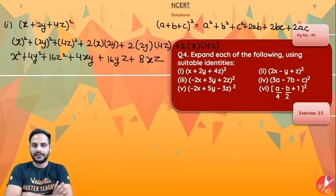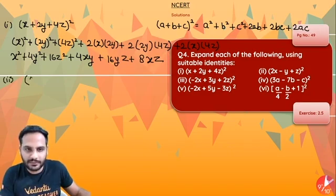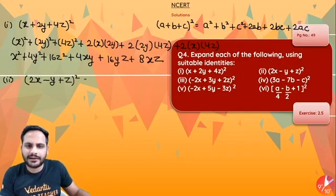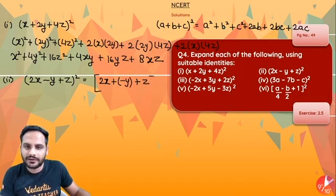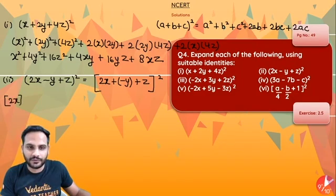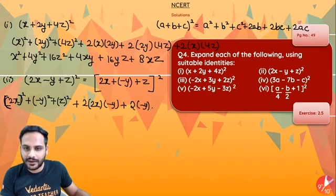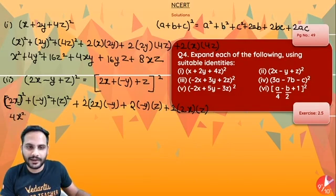For the second one: (2x − y + z)². Write it as (2x + (−y) + z)². So it is again in the form (a + b + c)² where a = 2x, b = −y, c = z. It will be equal to (2x)² + (−y)² + z² + 2·2x·(−y) + 2·(−y)·z + 2·2x·z.